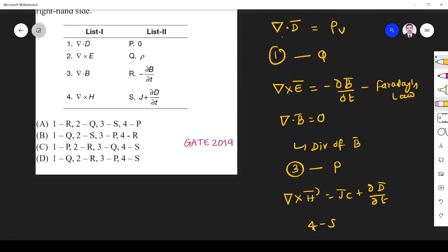So this is the answer: 1-Q, 2-R, 3-P, 4-S. So option D is the right answer.